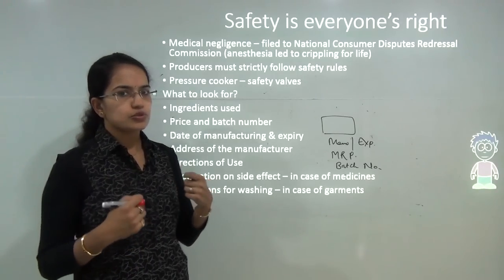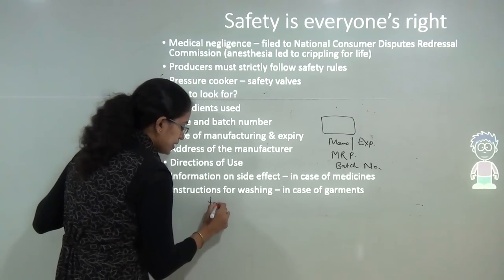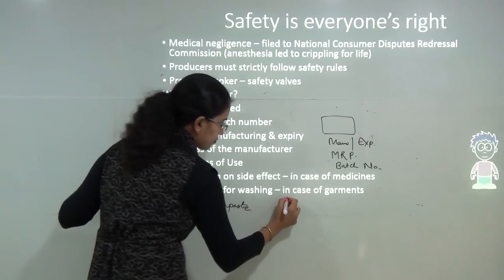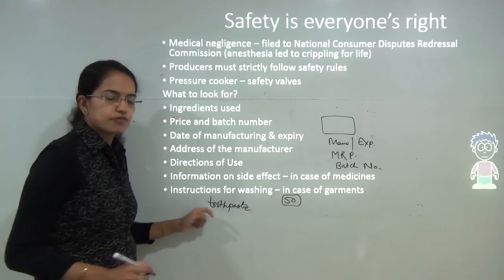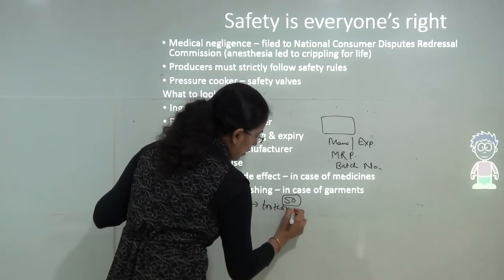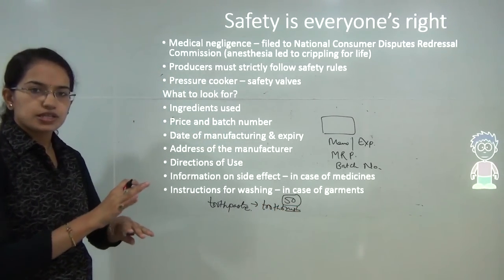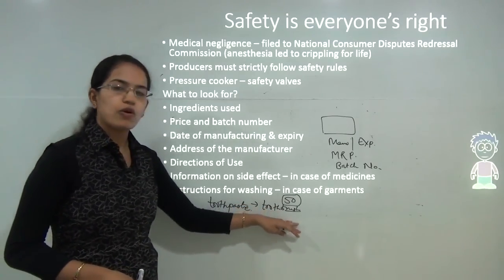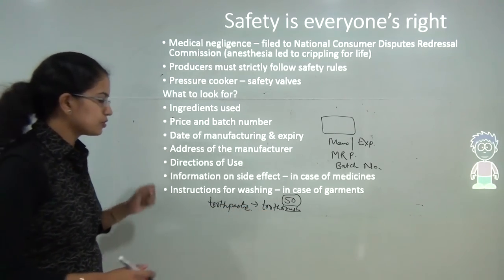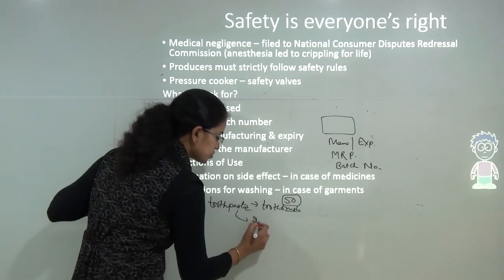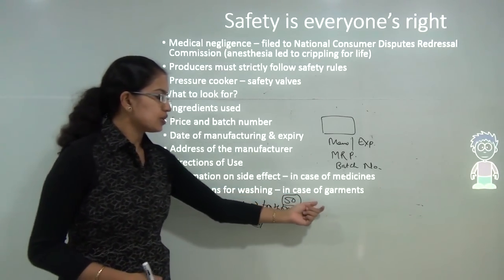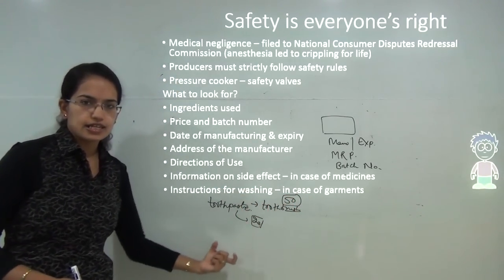If I want to buy a toothpaste and the shopkeeper says I can buy it for ₹50 only if I also purchase a toothbrush, as a customer I have the right to deny that. I can say I only want the toothpaste, which might cost ₹20, without the toothbrush. Customers have the right to choose and deny the bundled use of products being sold in the market.